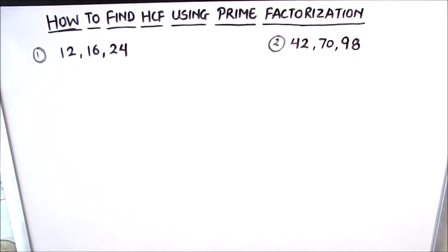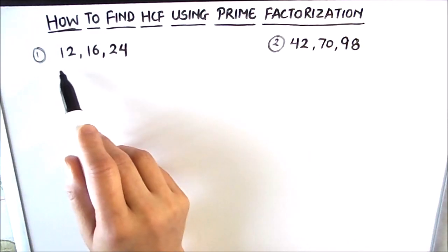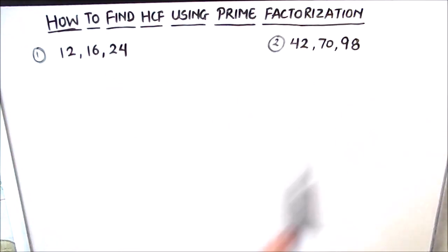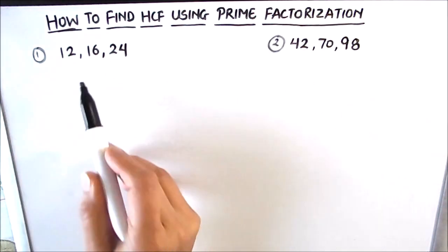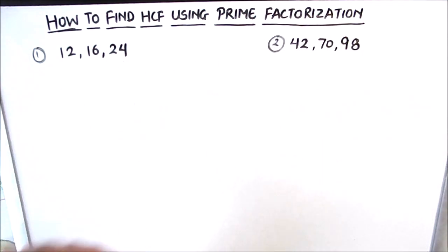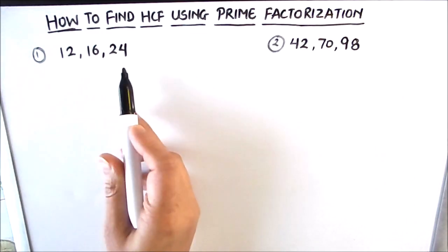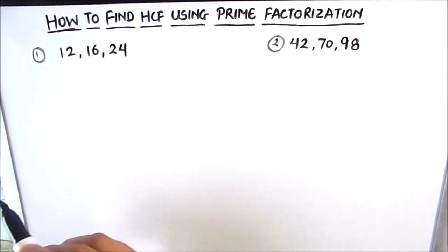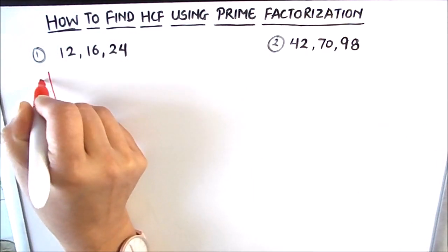Hello students. In this video we are going to be learning how to find the HCF using the prime factorization method. We will be solving two examples. HCF, as the name suggests, is the highest common factor of the numbers — a single number which divides all the numbers without leaving a remainder. We will divide the numbers using prime numbers to find their factors.